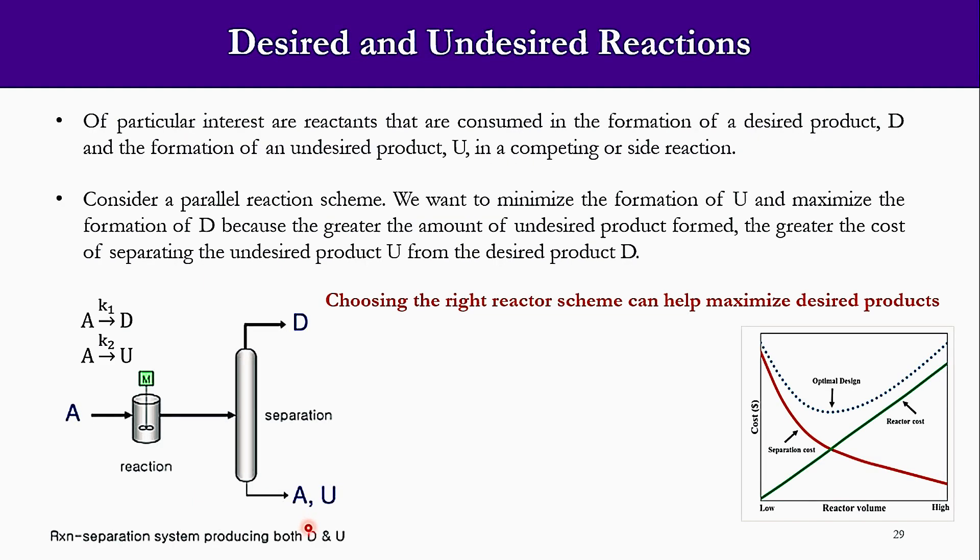Now, if you see here, I have discussed it earlier that we want to maximize the formation of desired product while we want to minimize the formation of undesired product. Let us assume that desired product is represented by D and undesired product is represented by U. A goes to D, which has the reaction rate constant as k1. A goes to U, which is represented as the reaction rate constant as k2.